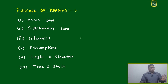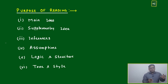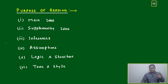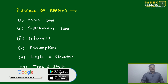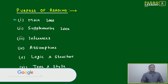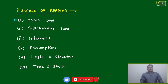Once you are reading any RC, keep these six points in mind — these are all pillars you have to keep in mind. Then things will stick: main idea — once you cross through, things will stick — supplementary idea, inferences, assumptions, logic and structure, tone and style. Main idea or central idea or main theme; supplementary idea; inferences; assumptions; logic and structure; tone and style. These six points — memorize them first.